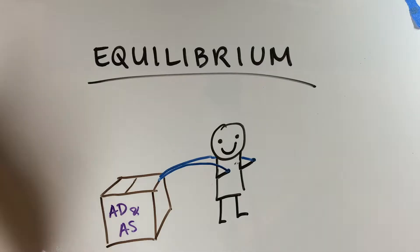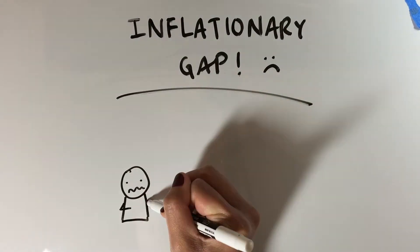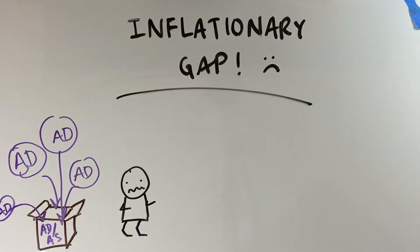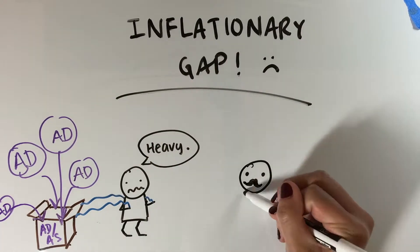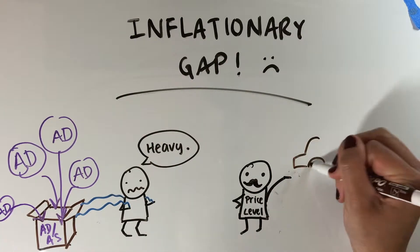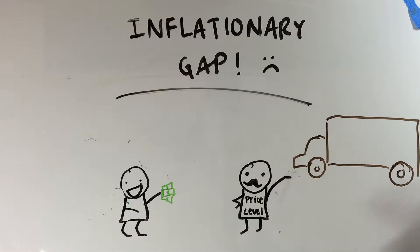But when aggregate demand increases, which is what happens when the government spends more money, it leads to a demand-pull inflation that shifts both equilibrium real GDP and price level to a higher quantity than before, resulting in even more inflation.